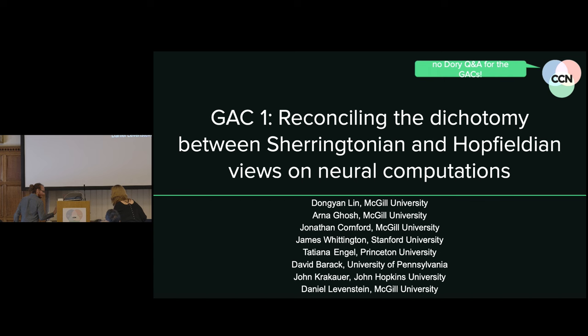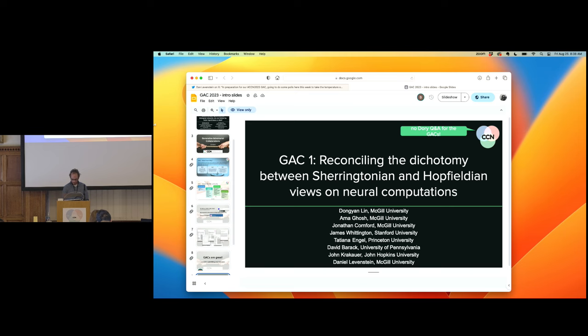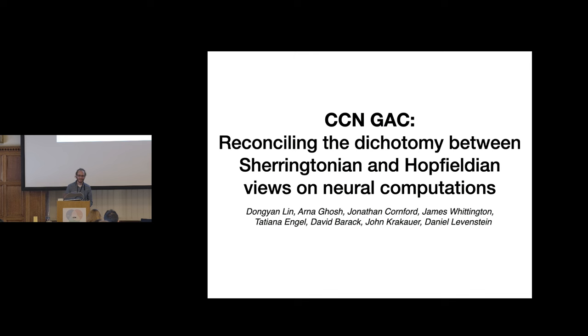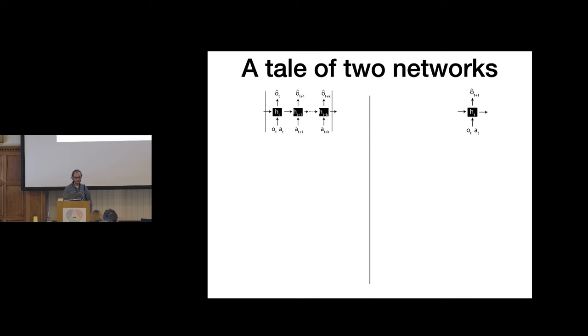Thanks everyone for coming, thanks for getting out so early, and thanks especially to the CCN organizers for making the conference and this GAC possible. The story of this collaboration really started for me after I presented some results in lab meeting. I was working on network models of spatial representation and was comparing two different network architectures that both learned to predict what an agent was going to see.